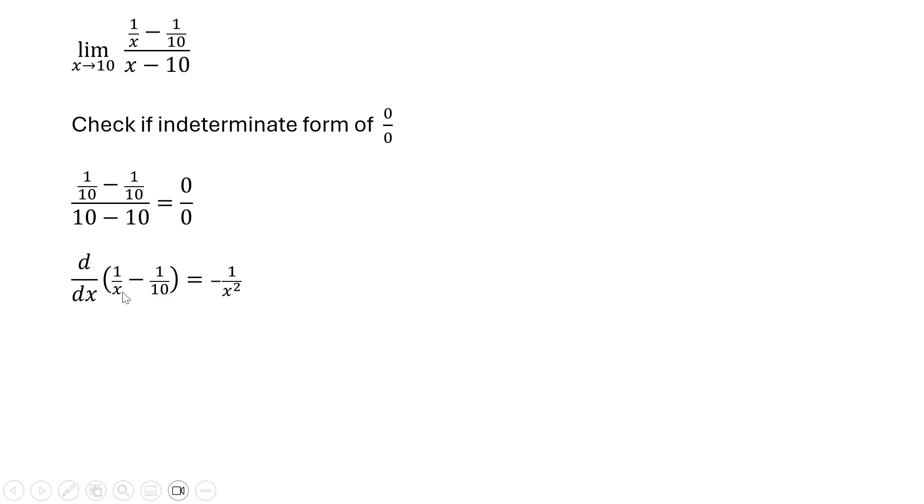Taking the derivative of the numerator we're going to get minus 1 divided by x squared, just using the quotient rule on 1 divided by x. Then taking the derivative of the denominator we just get 1.